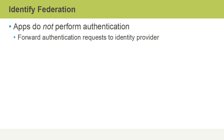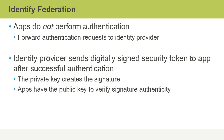Applications don't perform authentication; instead they forward the authentication requests from users to the trusted identity provider, for which they now have a public key. The identity provider then sends a digitally signed security token to the app after successful authentication for the user or device. The identity provider's private key creates the signature, and apps have the related public key so they can verify the signature for authenticity.